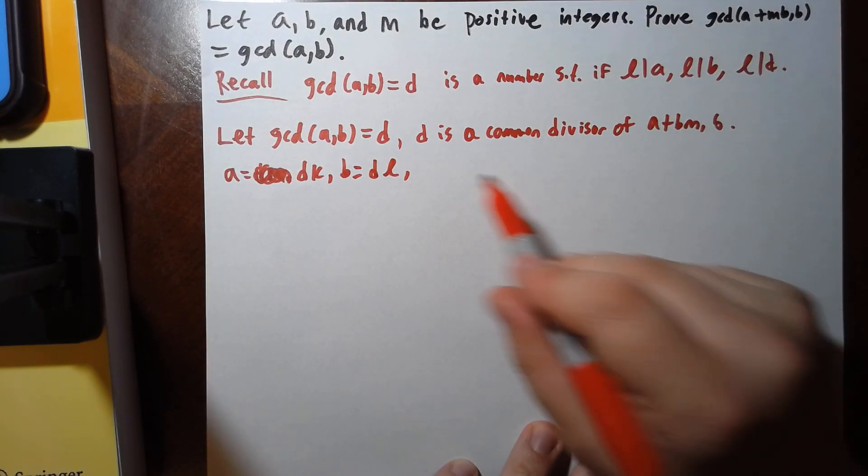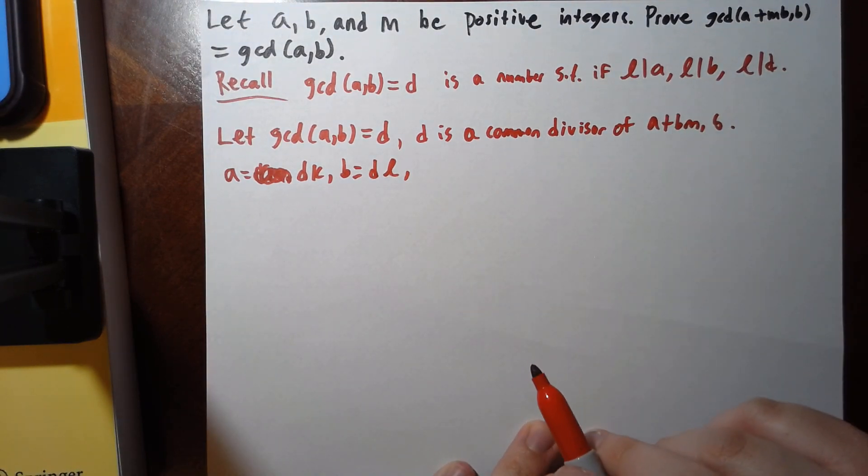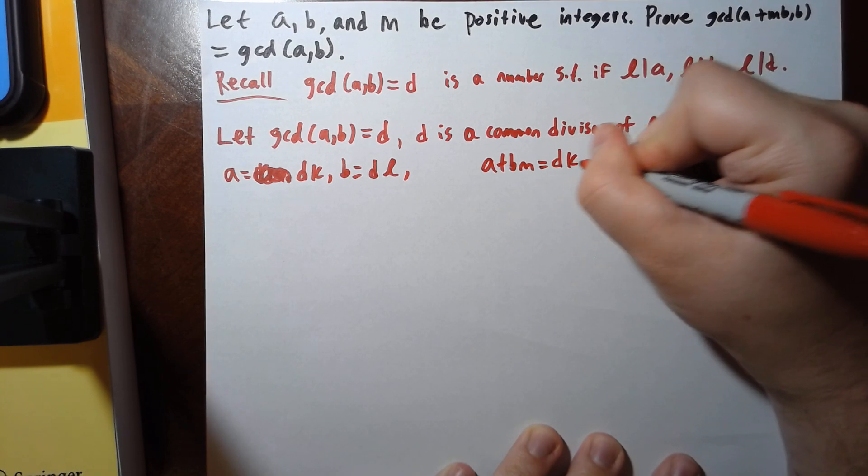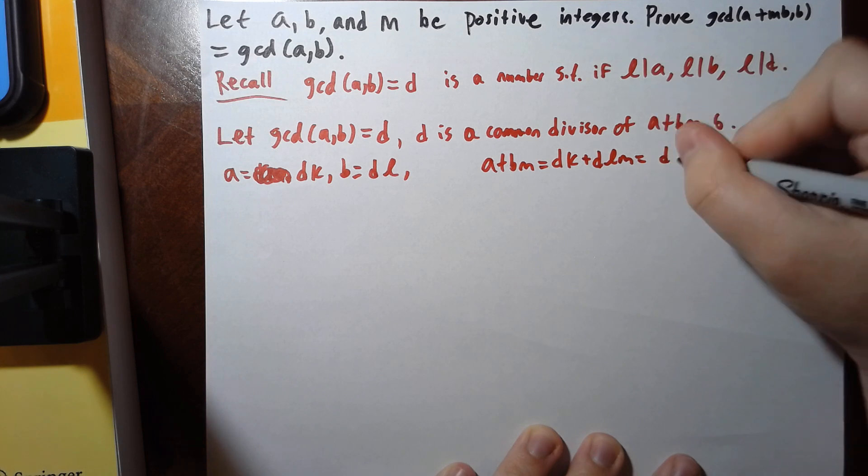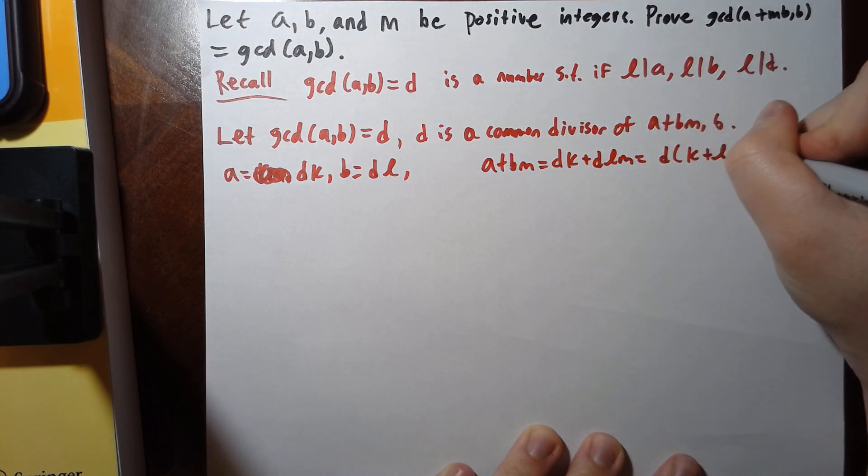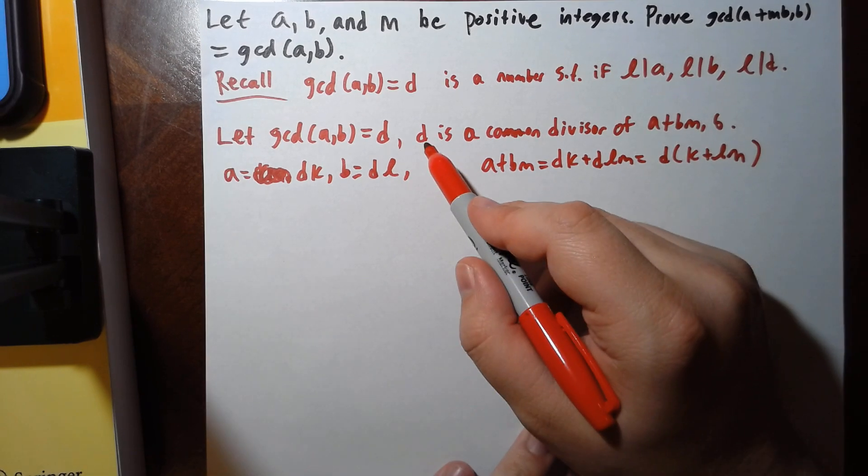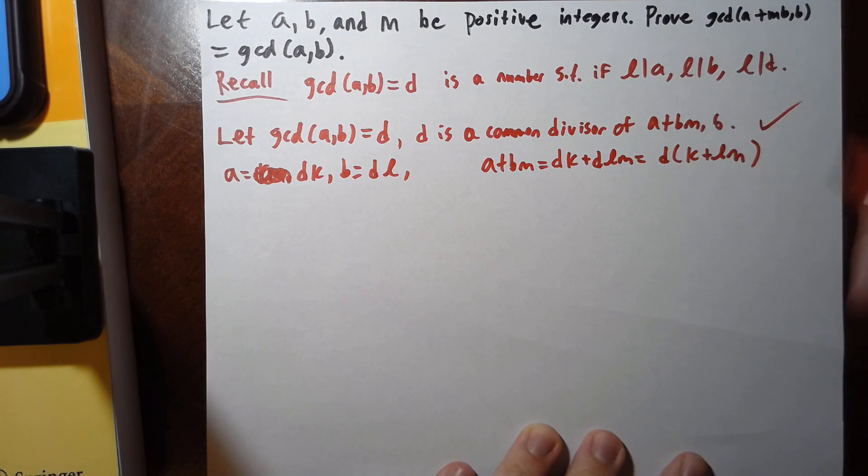So d divides b, and d divides a plus bm. Well, a plus bm equals dk plus dlm, which is d times k plus lm. So our common divisor d does divide this sum. Check.